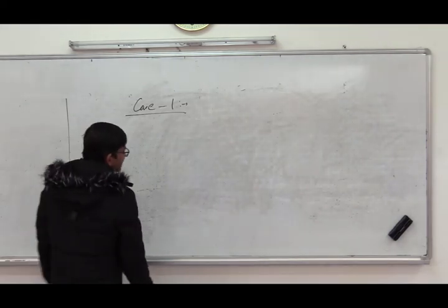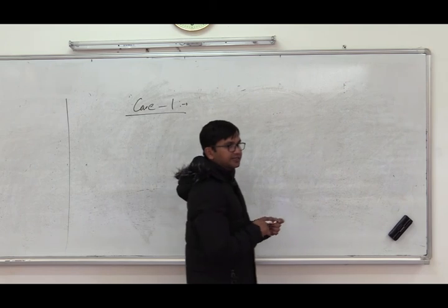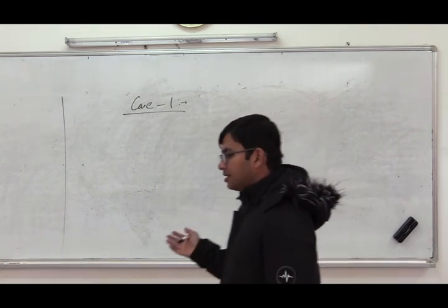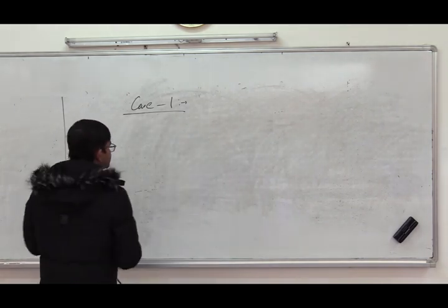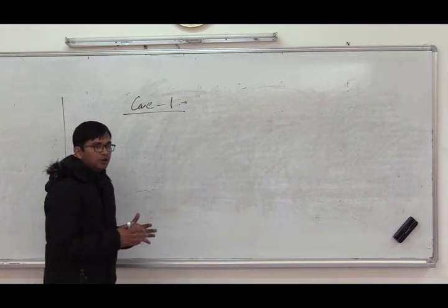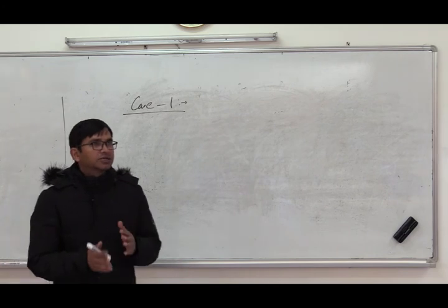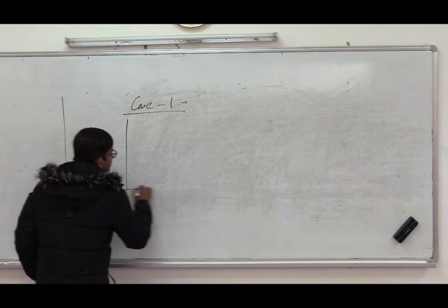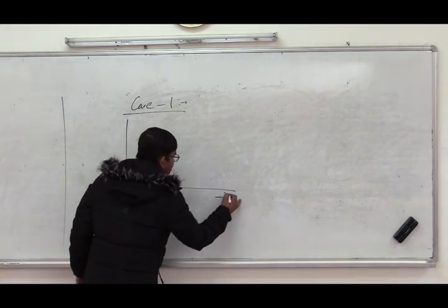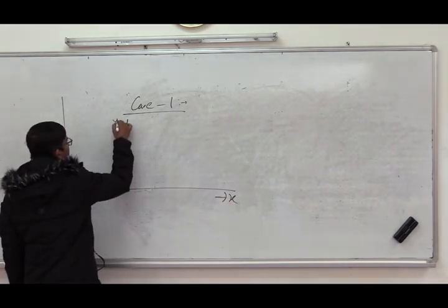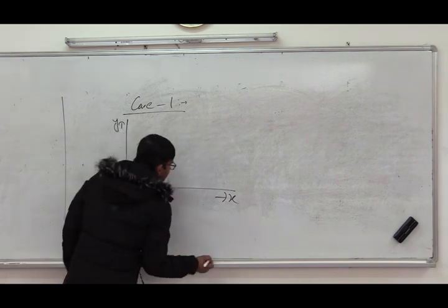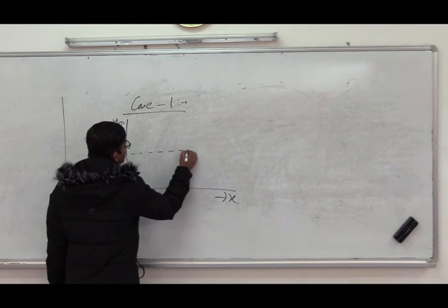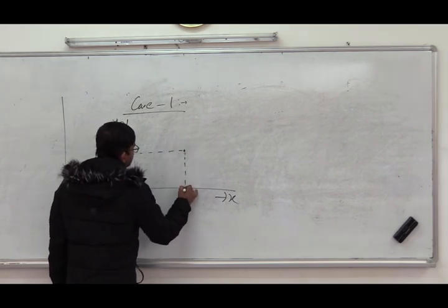In Case 1, we show when a country can make only exchange gain and there is no specialization gain. Here we consider the factors are not mobile at all, so one factor can work in only one sector. In this case, there will be no production possibilities curve — there will be only one production point.